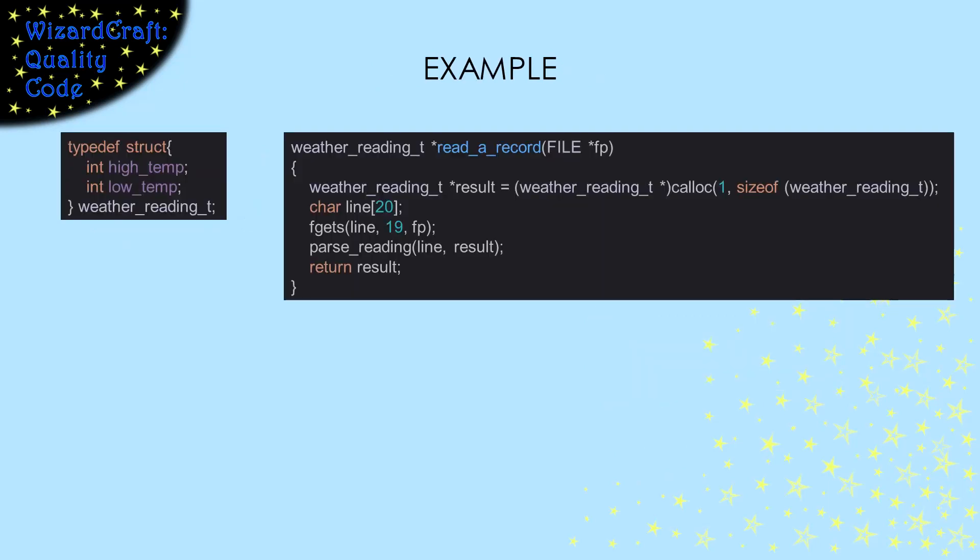Here's an example of why it can be hard to spot memory leaks. In this code, read_a_record is allocating space for a weather reading struct, setting its values by reading and parsing a line in a file, and then returning a pointer to the space it allocated.